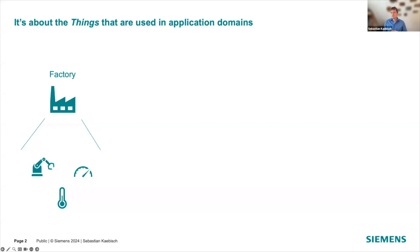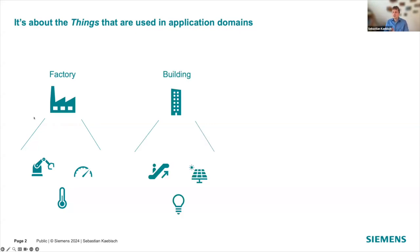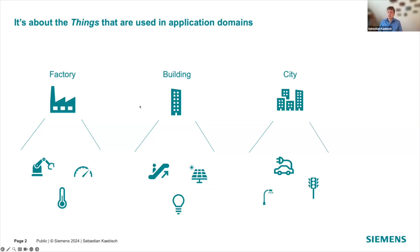I'm pretty sure that many people already have IoT equipment at home, such as humidity sensors, smart lighting, and Alexa, and so on. But such things also exist in other domains, such as factory domains, where there are robot things or measuring things such as temperature or pressure sensors. And in the building domain, you will find things like escalators, lamps, or energy sources such as photovoltaic systems.